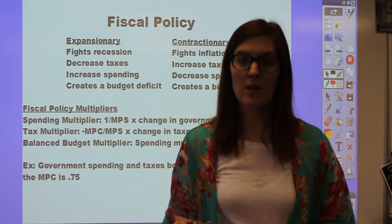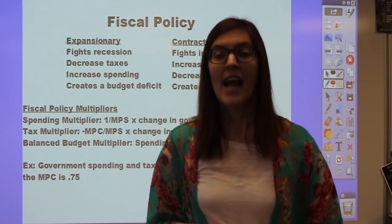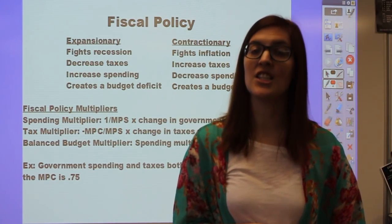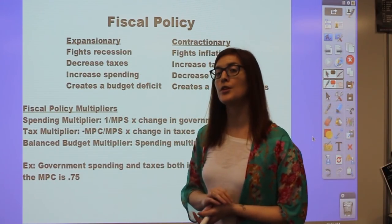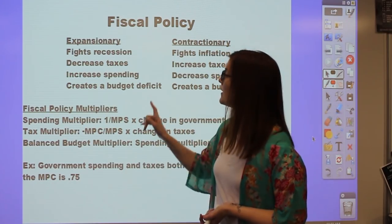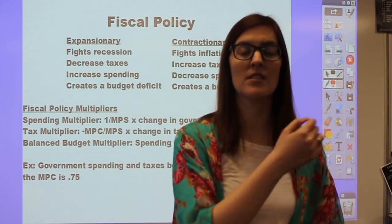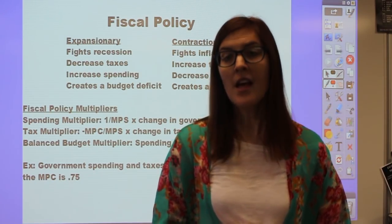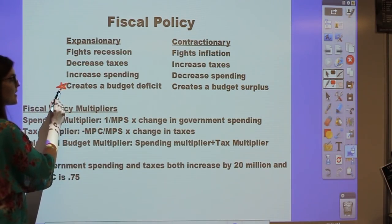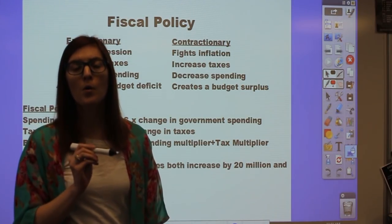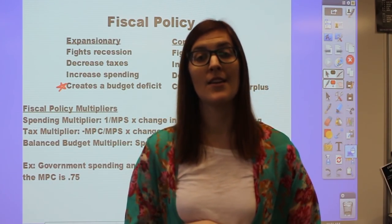Expansionary fiscal policy uses two tools we're familiar with from the news: government spending and taxes. The goal is to change the C and G of GDP. Fighting a recession, the government decreases taxes so consumers have more disposable income, or increases spending—boosting G directly or stimulating consumers to increase C. When the government spends more but collects less in taxes, it creates a government budget deficit. Always remember: expansionary fiscal policy creates a government budget deficit, which is important for crowding out later.